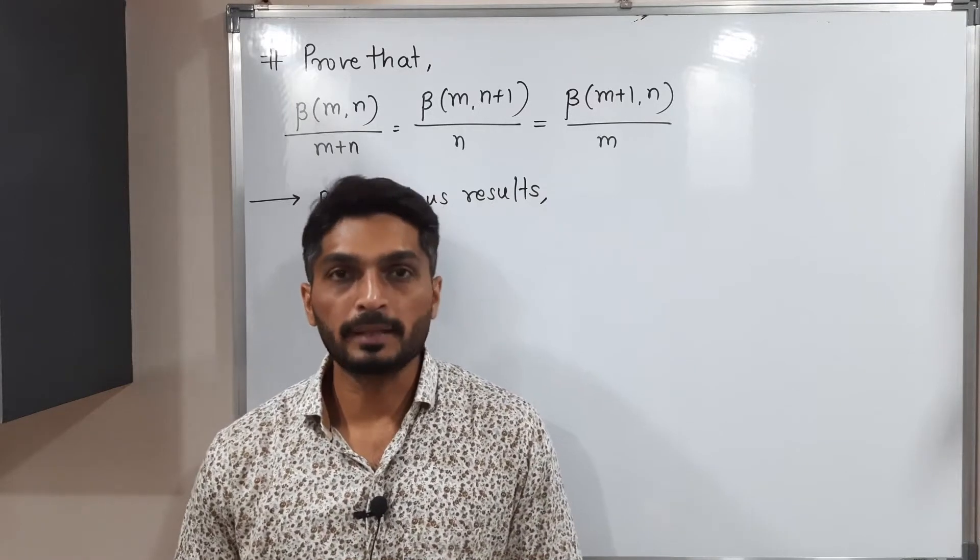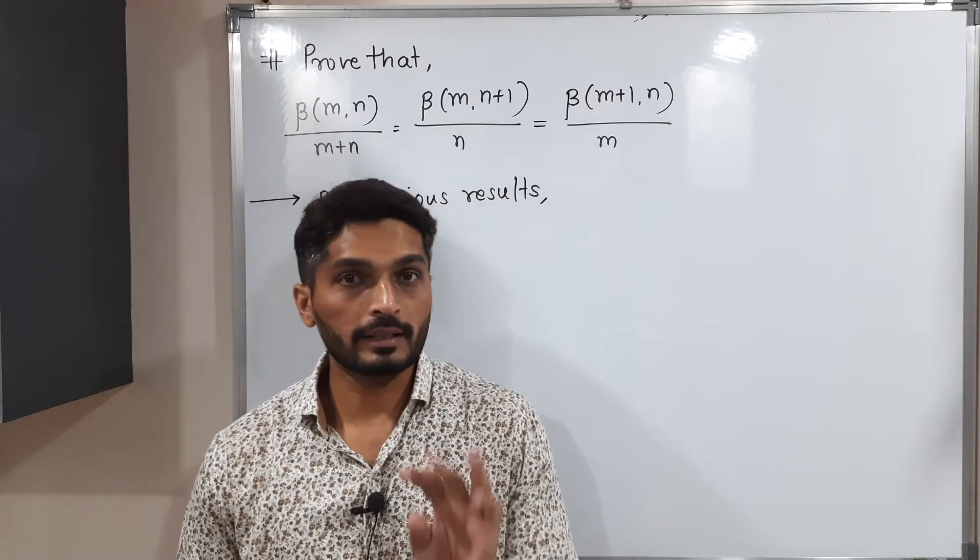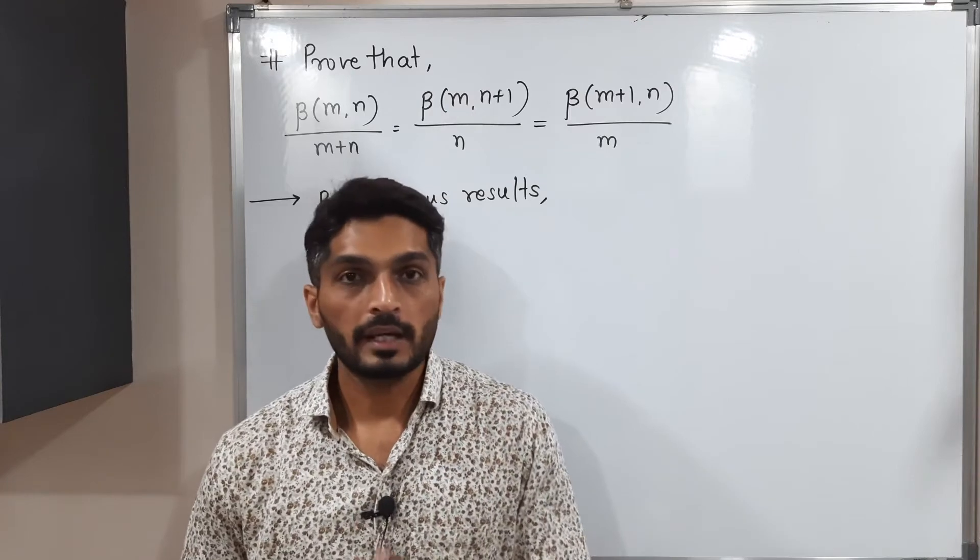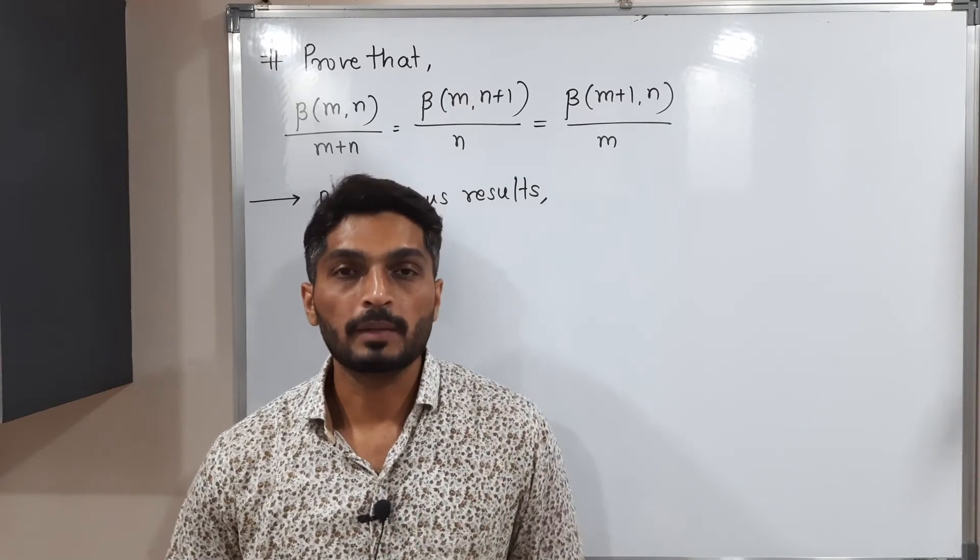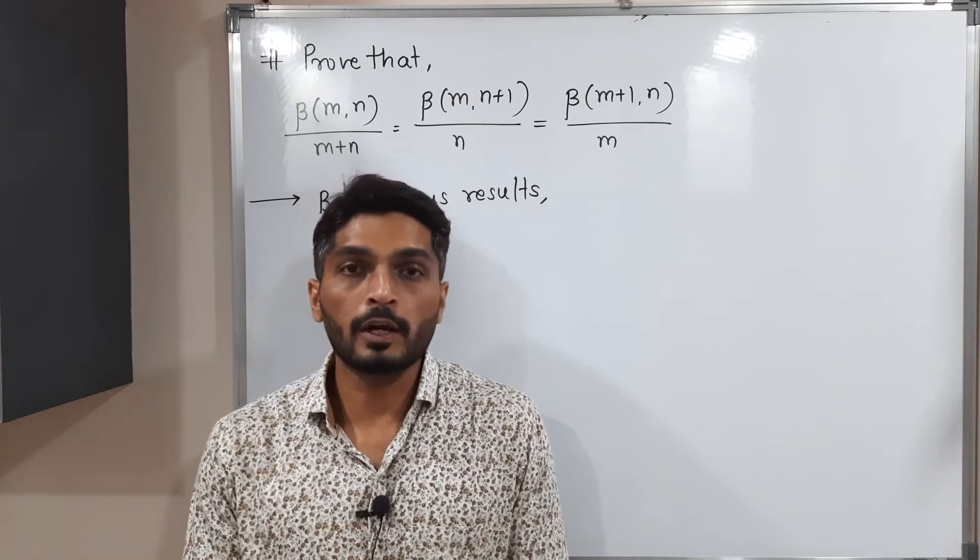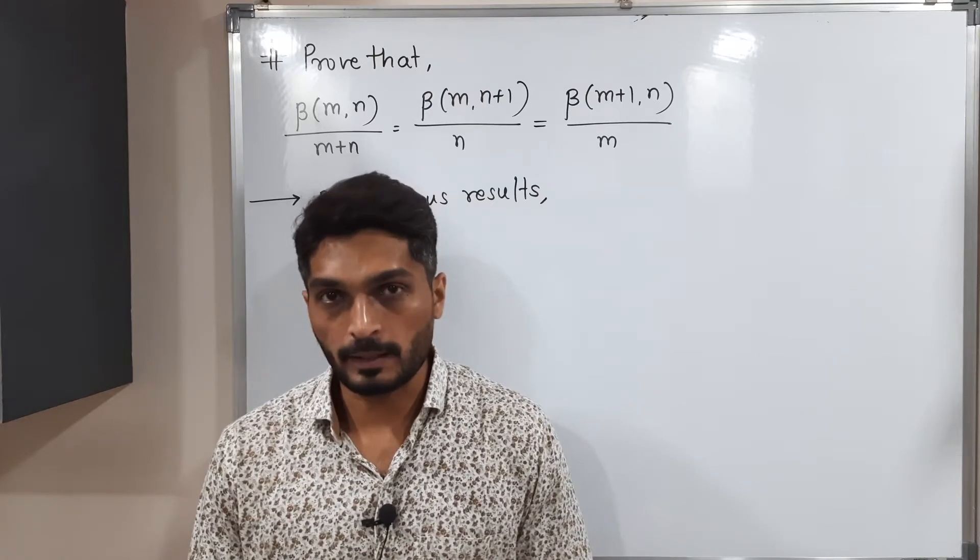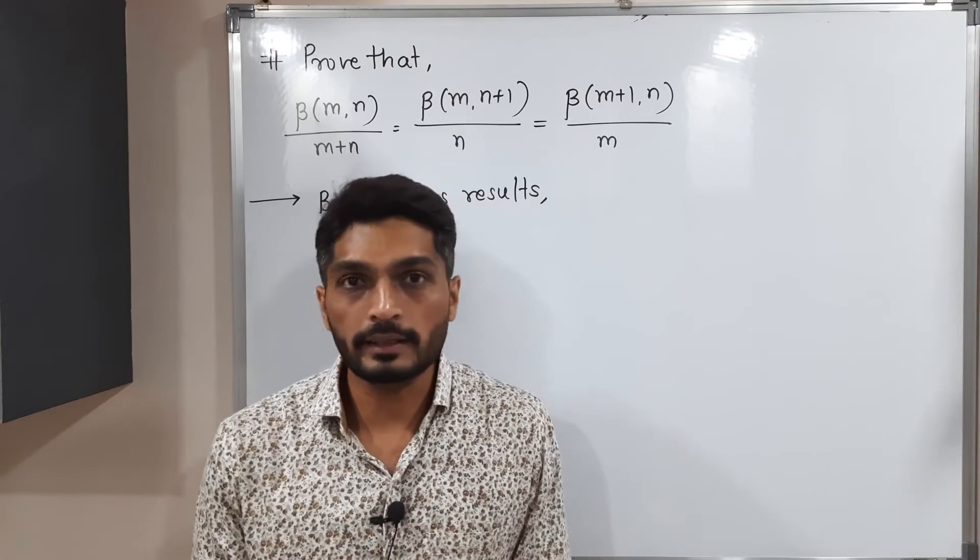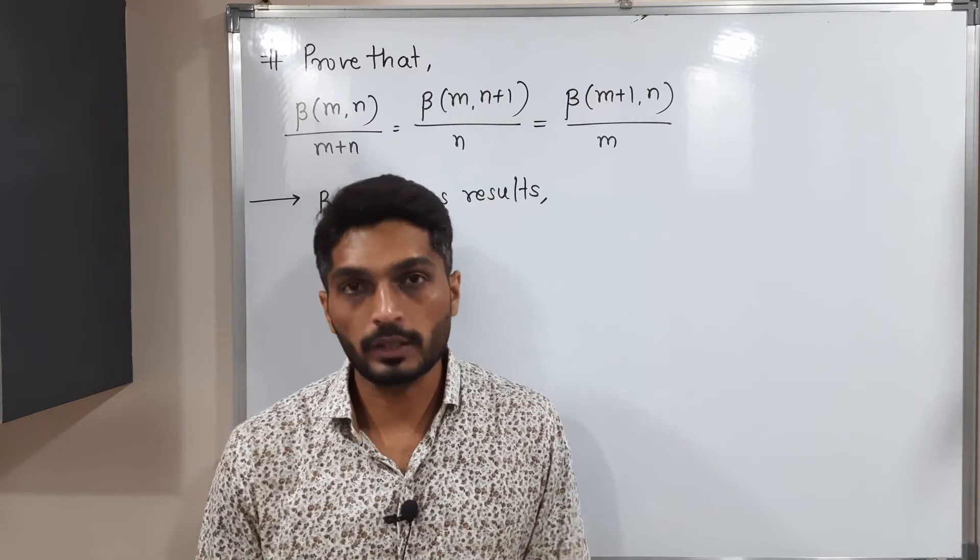Let us discuss this result of beta function. Here we have to prove that three terms are equal: A is equal to B is equal to C. Out of that, one equality we have already proved in our previous theorem. So let us recall that theorem and prove this theorem also.